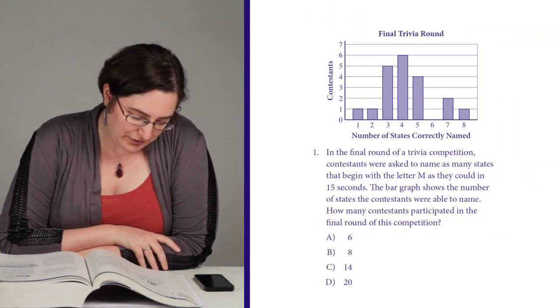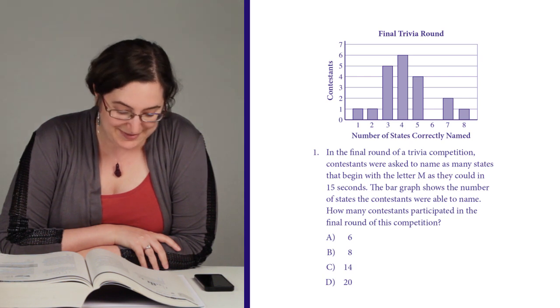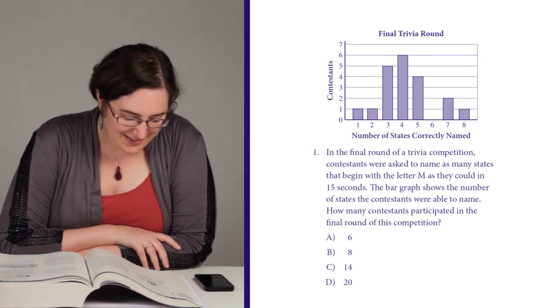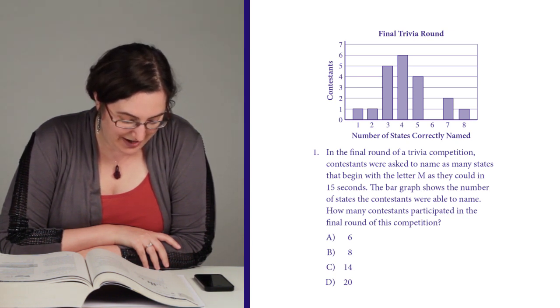In the final round of a trivia competition, contestants were asked to name as many states that begin with the letter M as they could in 15 seconds. The bar graph shows the number of states the contestants were able to name. How many contestants participated in the final round of this competition?